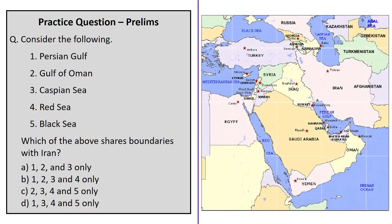The next question asks which water bodies share their boundaries with Iran. As seen in the map picture, Iran is surrounded by the Caspian Sea in the north and by the Persian Gulf and the Gulf of Oman in the south. The correct answer is option A: 1, 2, and 3 only.